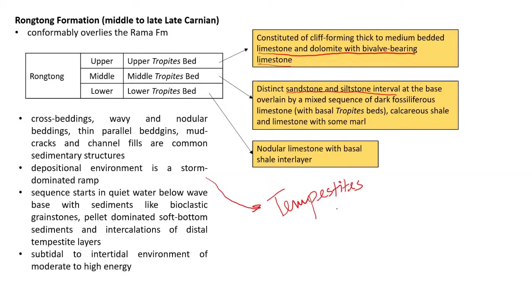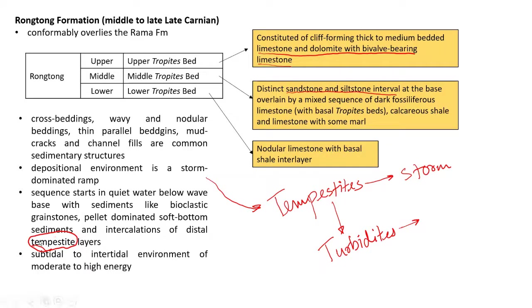Tempestites may sometimes be confused with turbidites. Tempestites are storm deposits — storms increase the inflow of sediments into the rock record — while turbidites are the sediment flows themselves, sudden catastrophic events. The sedimentary environment is found to be subtidal to intertidal, of moderate to high energy, based on these deposits and sedimentary structures.